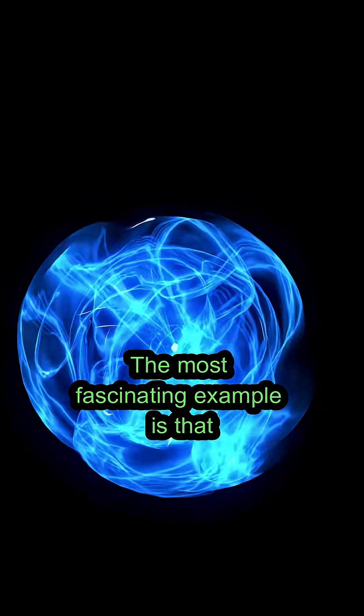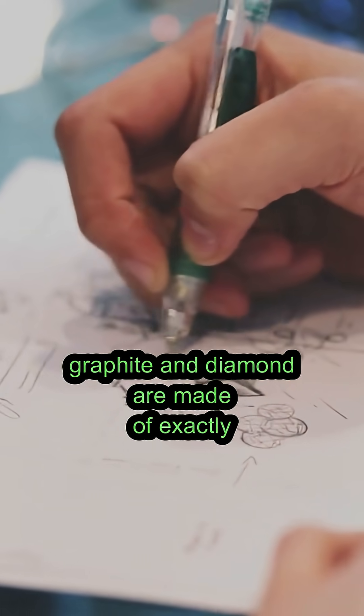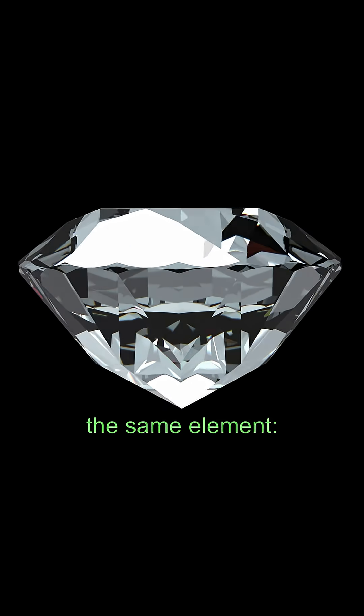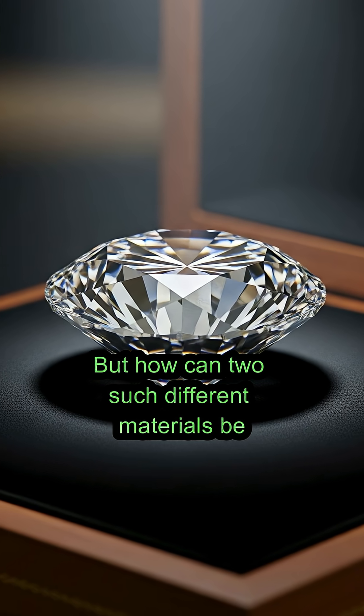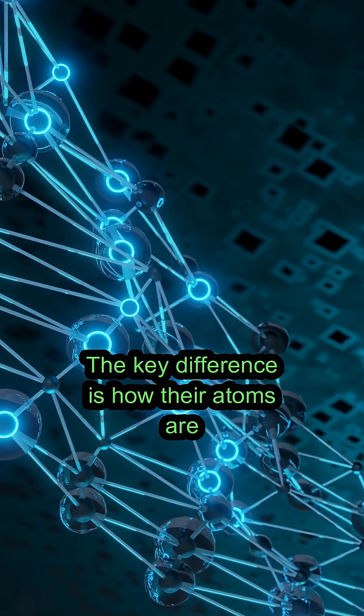The most fascinating example is that graphite and diamond are made of exactly the same element, carbon. But how can two such different materials be made of the same component? The key difference is how their atoms are organized.